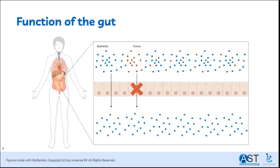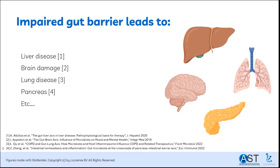The gut is the first line of defense against all xenobiotic compounds that enter the body via eating or drinking. The gut needs to filter all these compounds — nutrients need to pass, while toxins need to be repelled. Therefore, the gut needs a good functioning barrier. If the barrier function of the gut is insufficient, toxins can spread through the body and harm all other organs. This is how liver disease develops. But an impaired gut is also linked to study disorders and mood swings. Furthermore, it can worsen other diseases, such as inflammation during COPD.